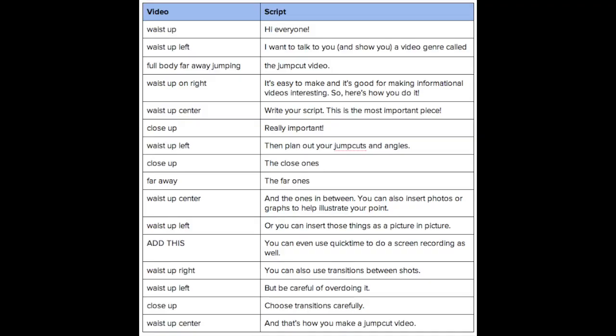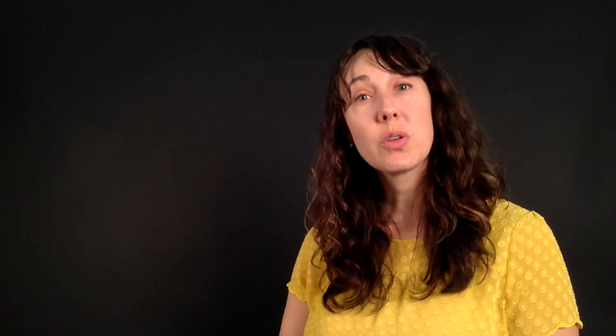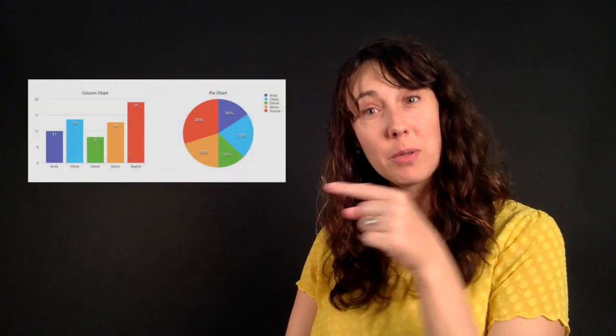Then plan all your jump cuts and plan out the angles of how you want to record — the close ones, the far ones, and the ones in between. You can also insert photos and graphs to help illustrate your point, or you can insert those things as a picture in picture.